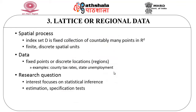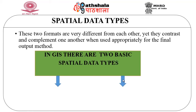The next type is lattice or regional data. Here the spatial process has the index set D as a fixed collection of countably many points in the space R^d. This is a finite discrete spatial unit. The data can be either fixed points, discrete locations, or regions. Examples for this kind of regional data are country tax rates or state unemployment. The research interest focuses on statistical inference mechanisms and estimation or specification tests. There are two formats of spatial data types — raster and vector — which contrast and complement one another when used appropriately.